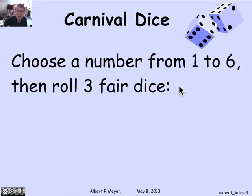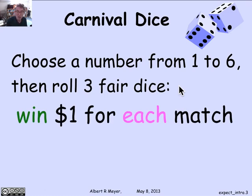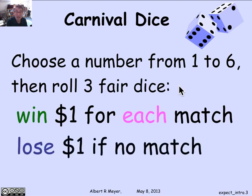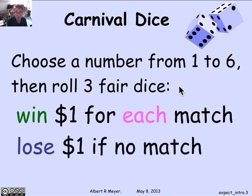The payoff goes as follows: for every match of your favorite number, you get $1. And if none of the dice show your favorite number, then you lose $1.